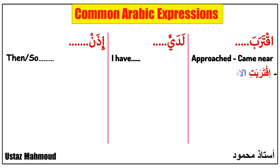Please look at the first phrase: 'Iqtarabat al-imtihaanatu' — it means 'the exams approached.' 'Iqtarabat' means 'approached,' 'al-imtihaanatu' means 'the exams.' We use 'Iqtarabat' with 'ta' here because 'al-imtihaanatu' is feminine, so we say 'Iqtarabat al-imtihaanatu.'